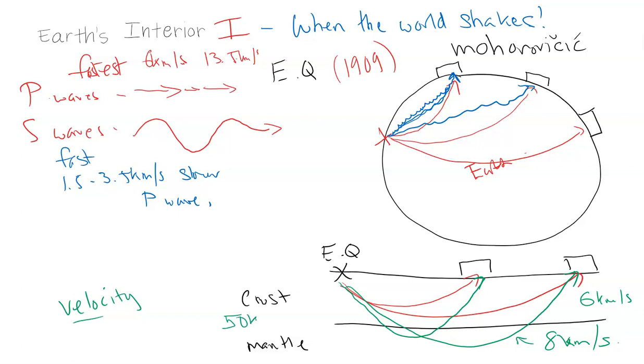He saw that at a certain depth, on average around 50 kilometers down, there was a discontinuity, which was a sharp, abrupt change in the speed of these seismic waves. So he did some experiments on the surface, because you can't go that deep. You have to test on the surface and then apply it to the Earth's interior, because we know that physics and chemistry and math are universal constants.